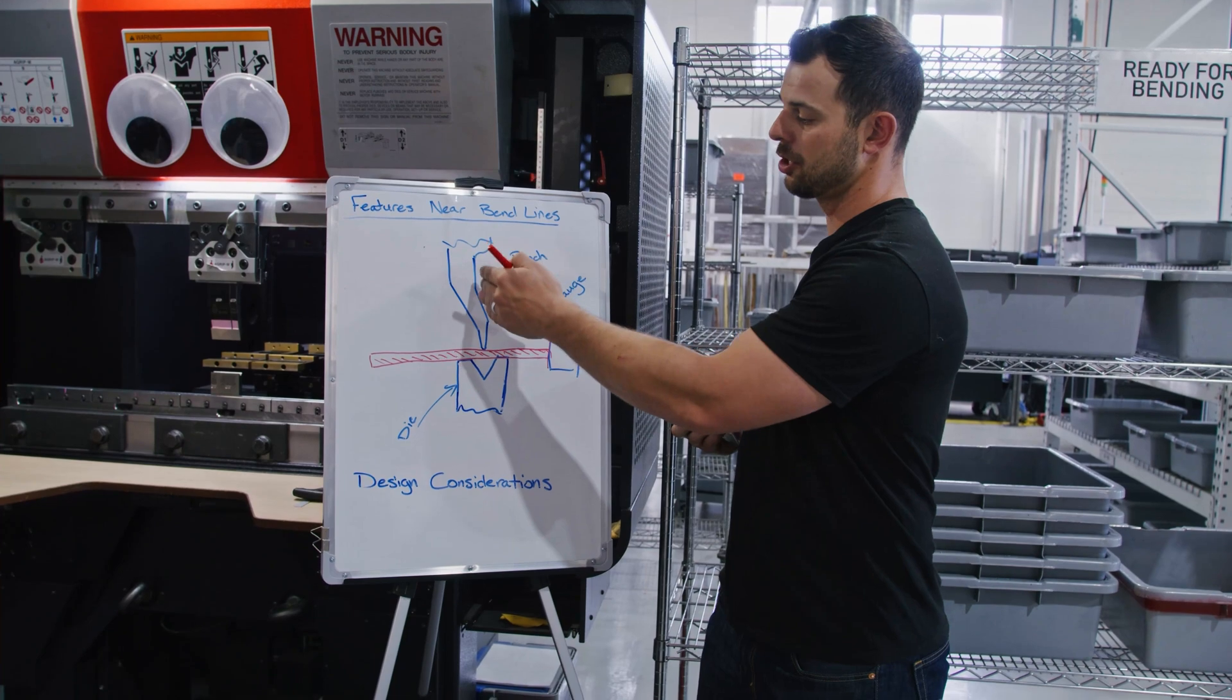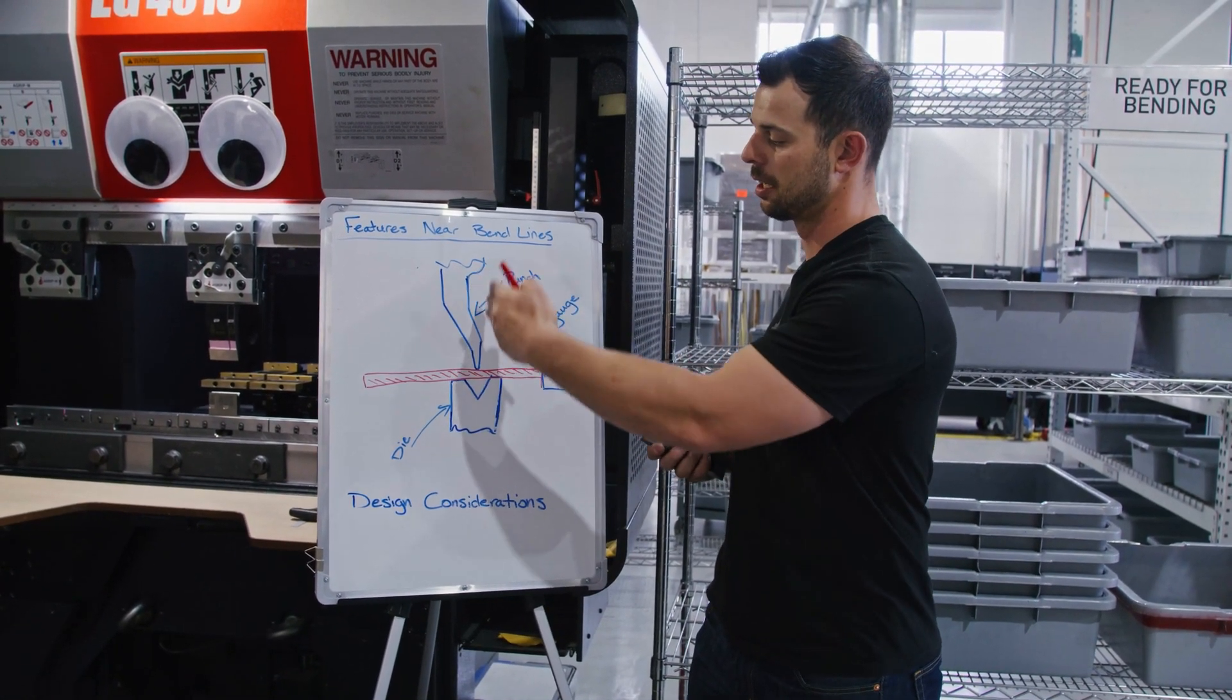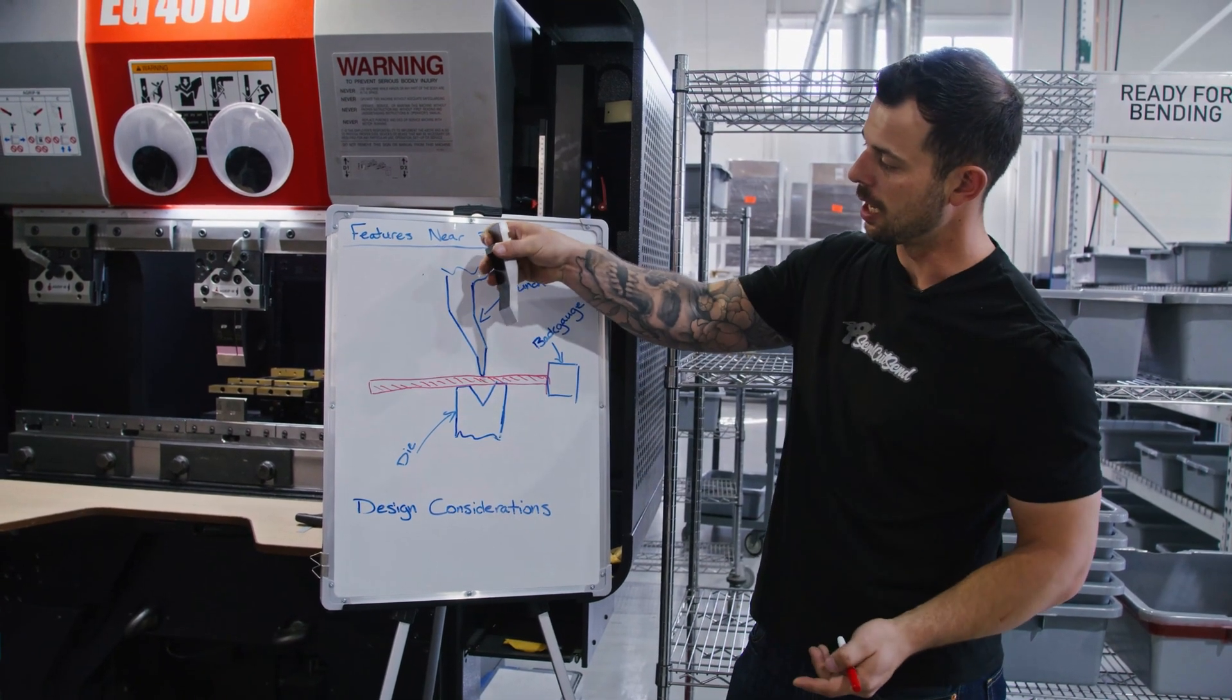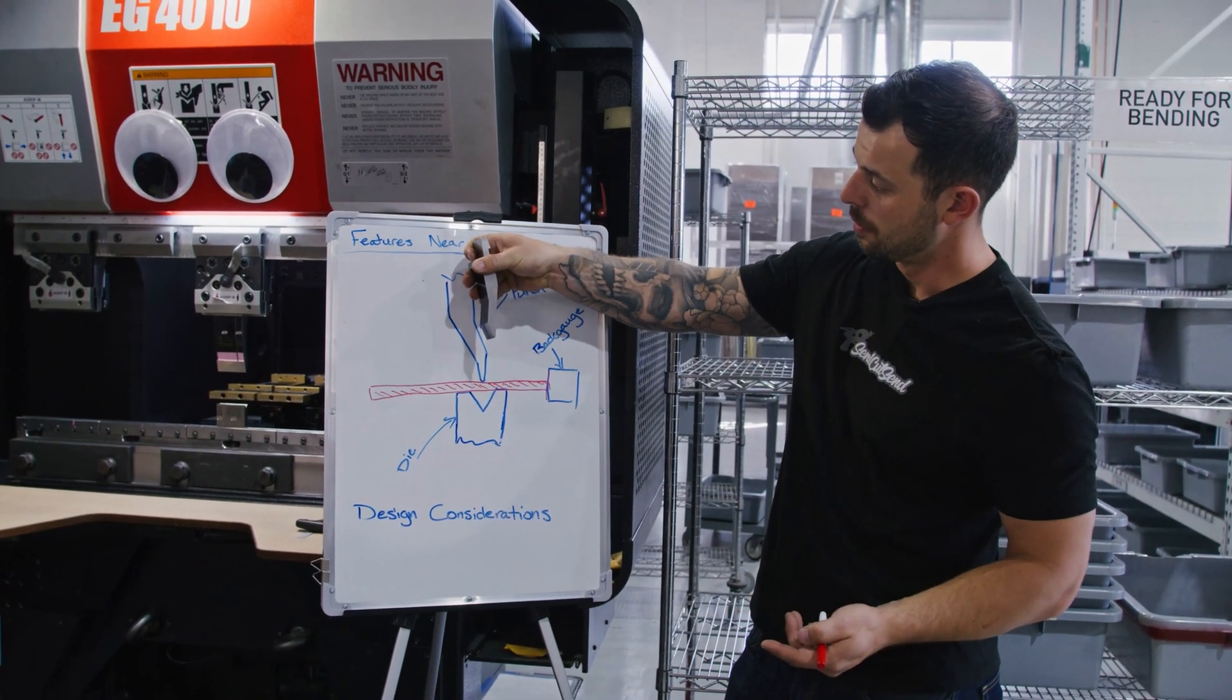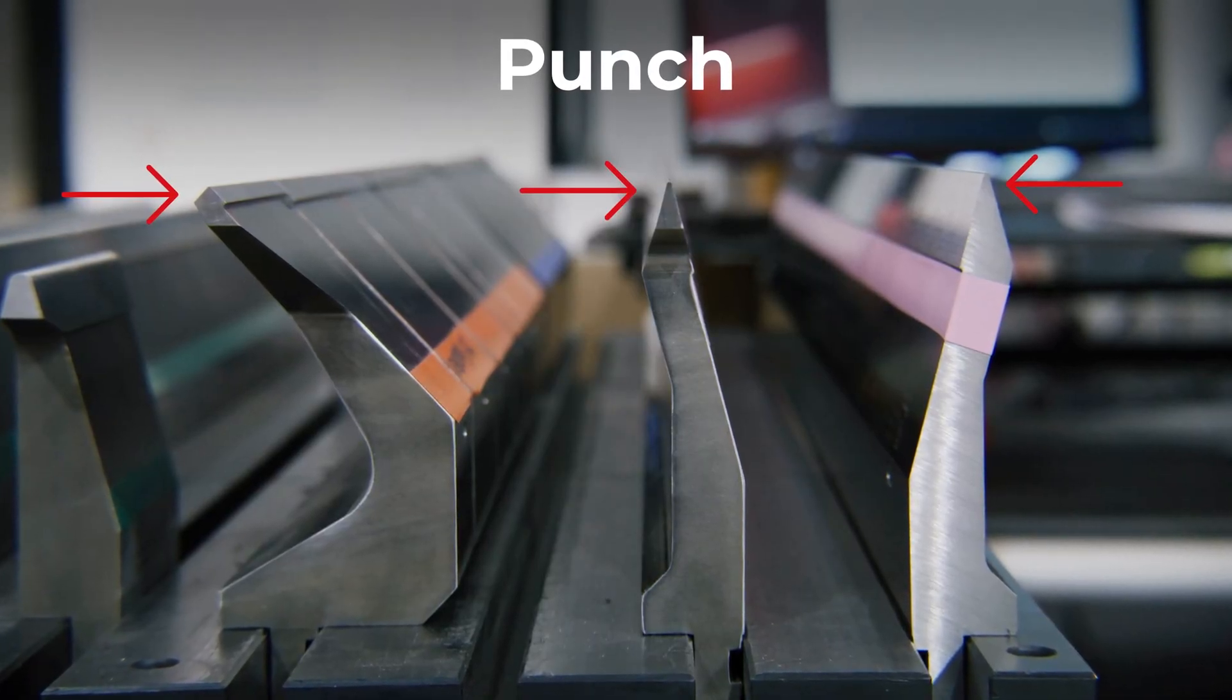Next, we have a punch that sits above the part and the die sits below it. So as our part sits on this die, the punch will come down. And as I got a punch in my hand here, the punch will come down and make contact with that part, forcing it down into the die.